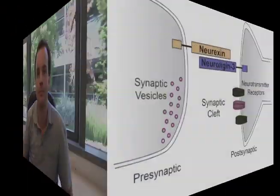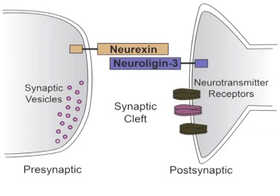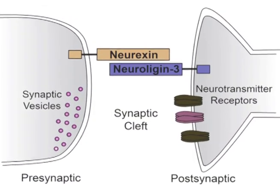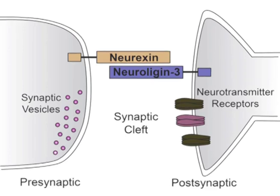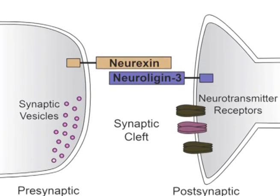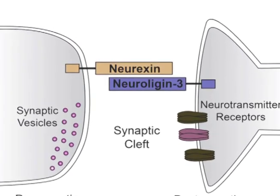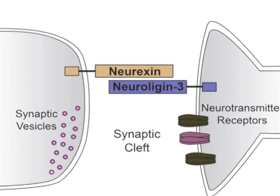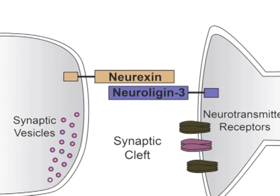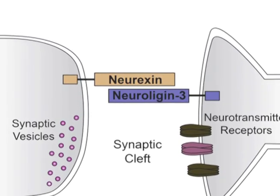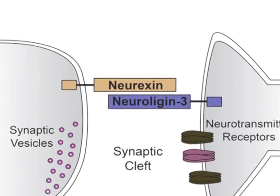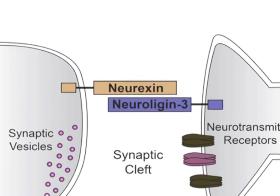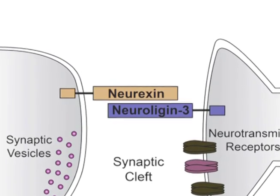I'm here to tell you about our new paper, which you can read in this issue of Cell. In the brain, pre- and postsynaptic specializations are held together by cell adhesion molecules that span the synaptic cleft. Neuroligins are one family of postsynaptic cell adhesion molecules. They bind to presynaptic neurexins and shape the functional properties of synaptic connections.